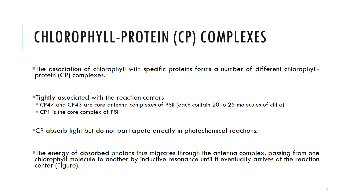When I showed you the photosystem 2 schematic diagram, I showed you the photosystems. PS1 also has chlorophyll-protein complexes. The core antenna chlorophyll-protein complexes of PS2 contain 20 to 25 chlorophyll a molecules. The core antenna chlorophyll a absorbs light but does not participate directly in the photochemical reaction. However, the protein-bound antenna chlorophylls lie very close together such that excitation energy can easily pass between adjacent pigment molecules by inductive resonance — that is, radiation-less energy transfer — and thus migrates through the antenna complex from one chlorophyll molecule to another until it eventually arrives at the reaction center.